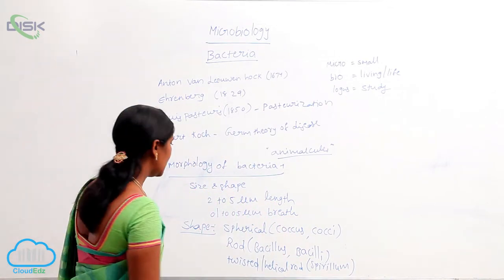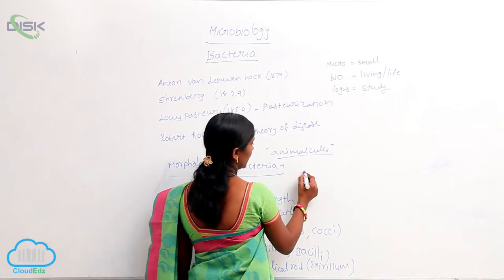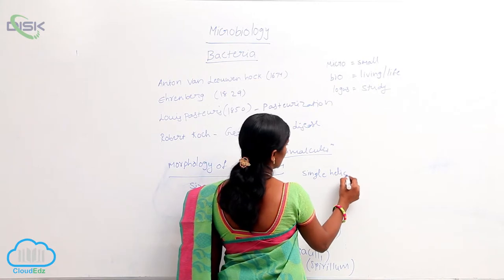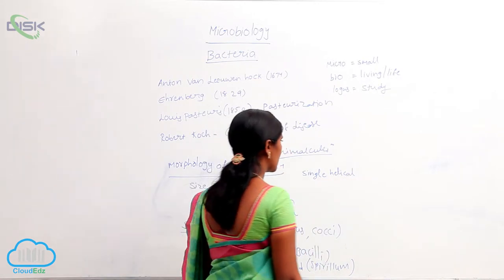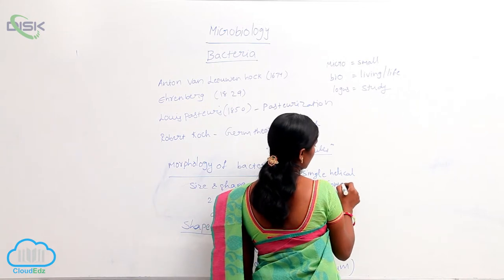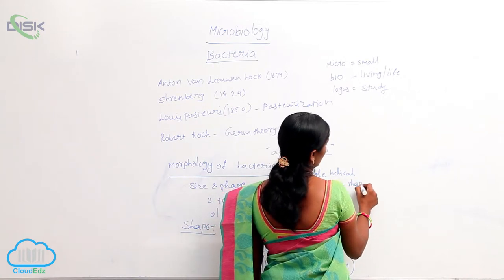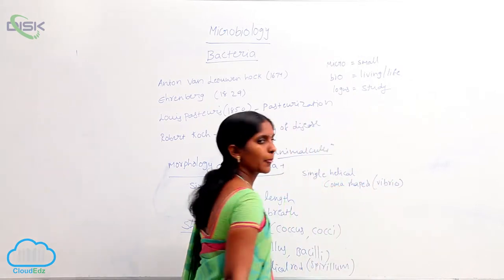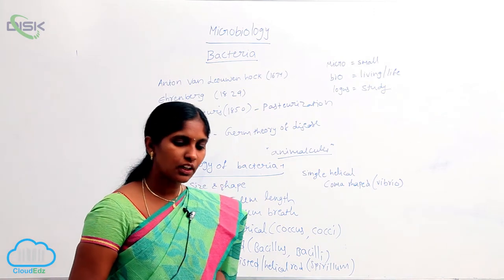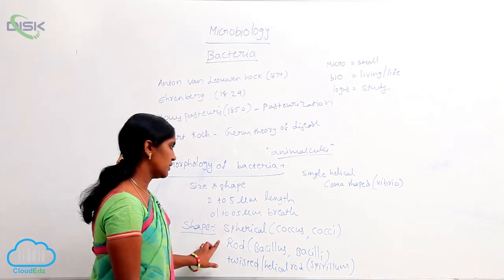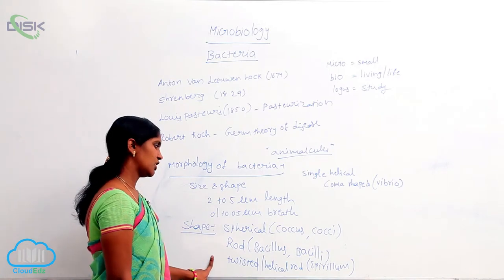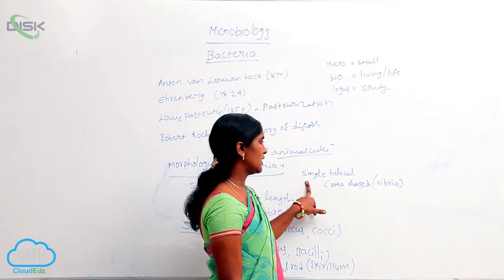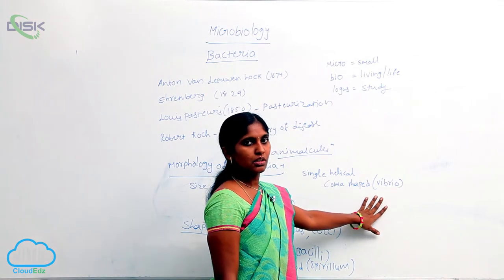Next is single helical shape, which is comma-shaped. That is called vibrio. So, bacteria are found in different shapes: spherical shape is coccus, rod shape is bacillus, twisted or helical rod is spirillum, and single helical comma-shaped is vibrio.